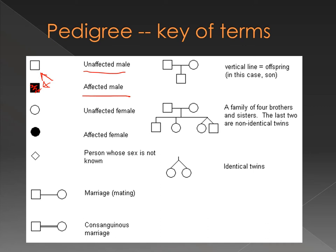The way I remember which one is affected is that the males are squares. That doesn't make any sense but for some reason it helps me to remember it. Circles represent females, and this circle here means that this female is affected because it's colored in. The empty circle is an unaffected female. A diamond — you'll rarely see this one — represents a person whose sex is not known, perhaps they died as a very young child and there are no surviving relatives that can tell you.